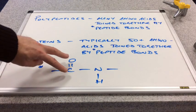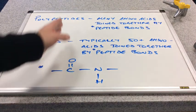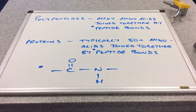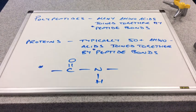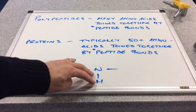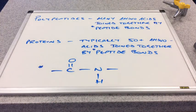So we tend to put the C double bond O pointing in one direction, and the NH pointing in the opposite direction. You wouldn't get marked down if you'd put that H up there, but it just looks better like that.